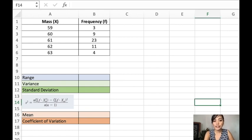Now let's solve for the measure of variation in an ungrouped frequency distribution table. An example of that is this given: the mass 59 with a frequency of 3, a mass of 60 with a frequency of 9, and so on and so forth.